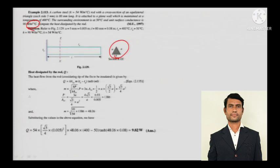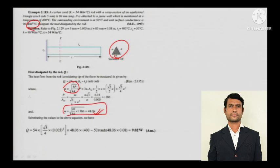For heat dissipated by the rod, considering the fin tip to be insulated, the formula is q = √(hPkA) × θ₀ × tanh(mL). Calculate the fin parameter m first — after the mathematical substitution you get m = 48.06. Substitute all values into the parent equation to get the heat transfer q.